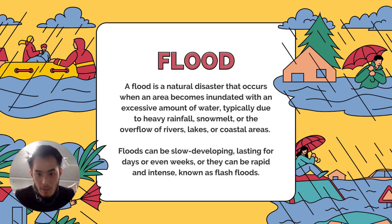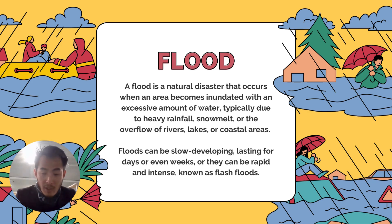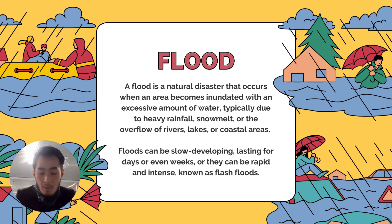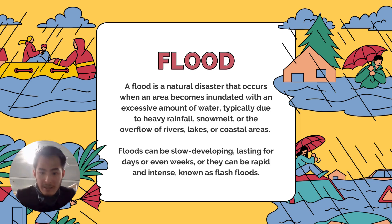The second natural disaster we're looking at is flooding. Flooding is a huge issue, especially in developing countries, and even in Australia — low-lying places are more susceptible and easier to get floods. Even in Melbourne, there was a flooding event a few years ago where the Maribyrnong River overflowed. This is a problem that we really need to address.